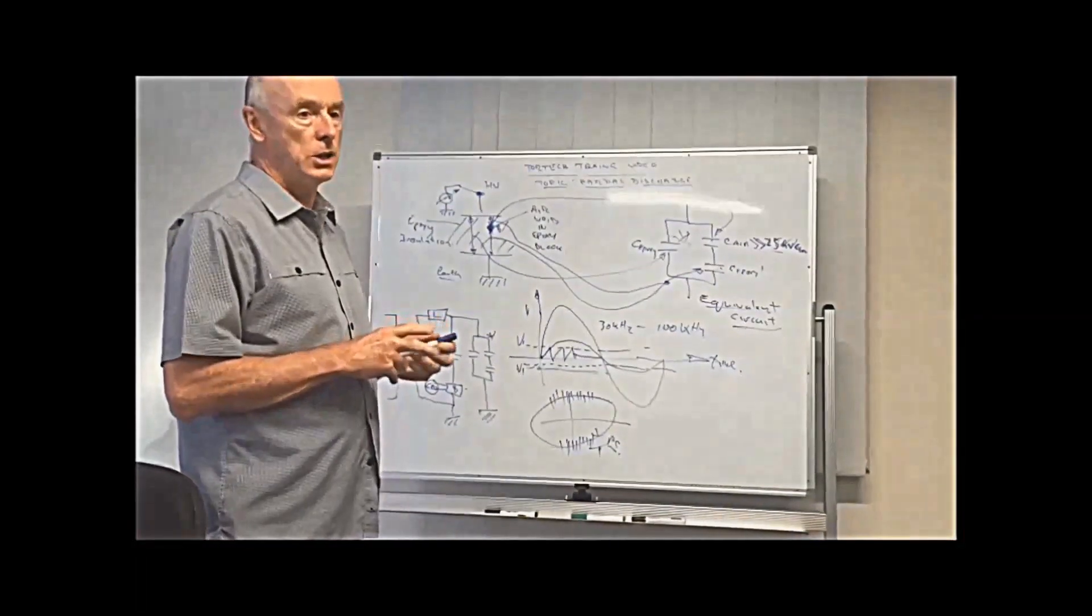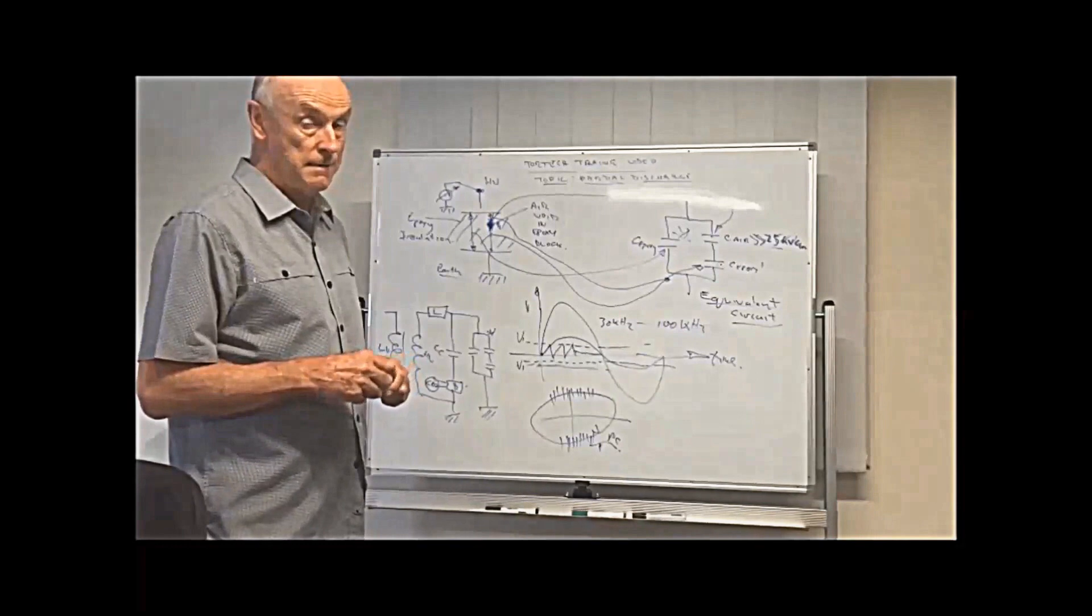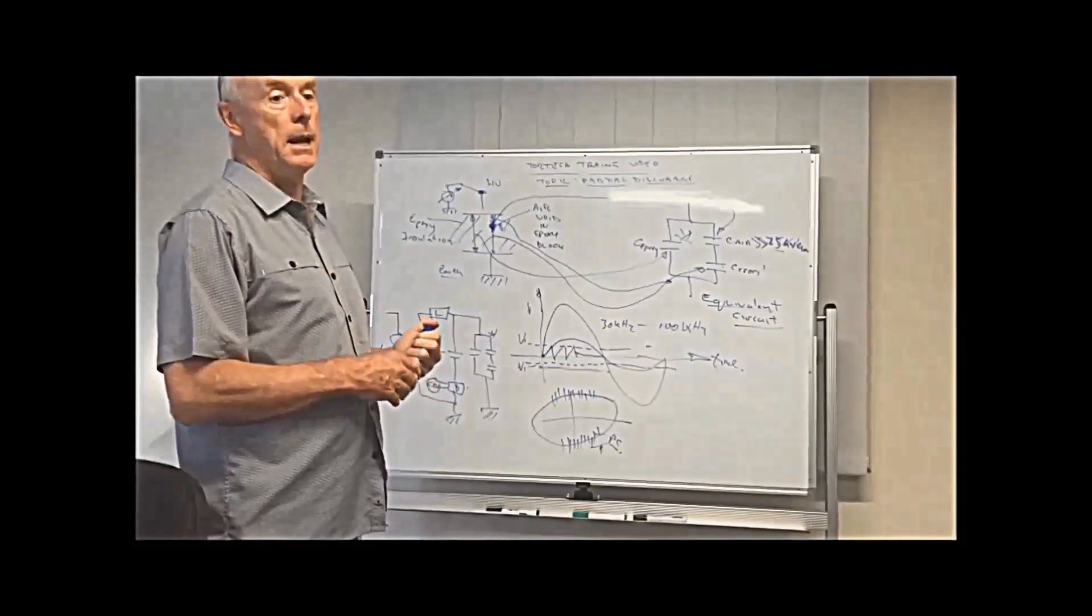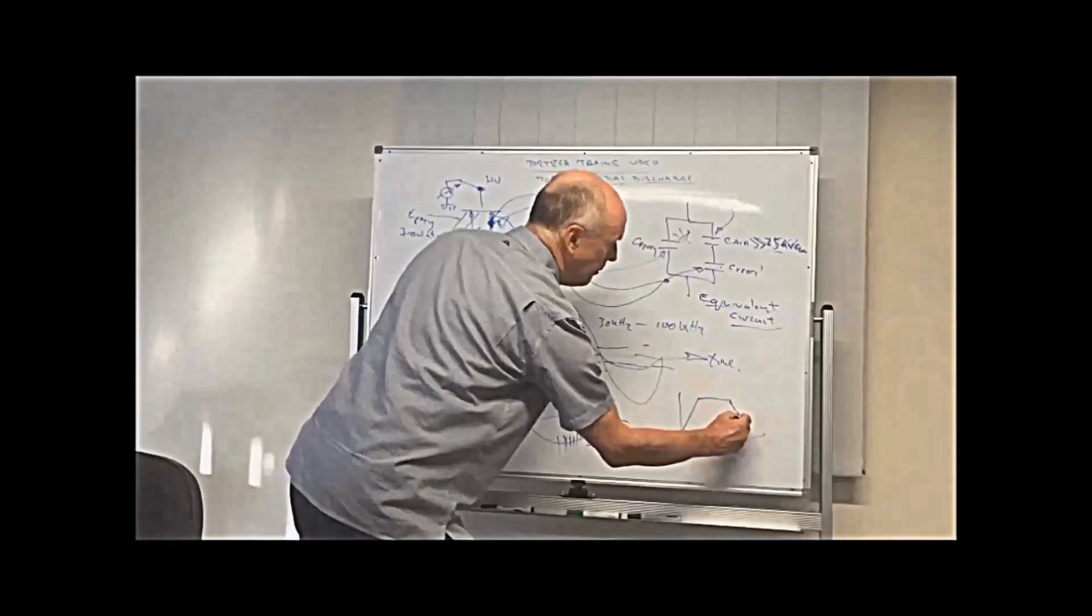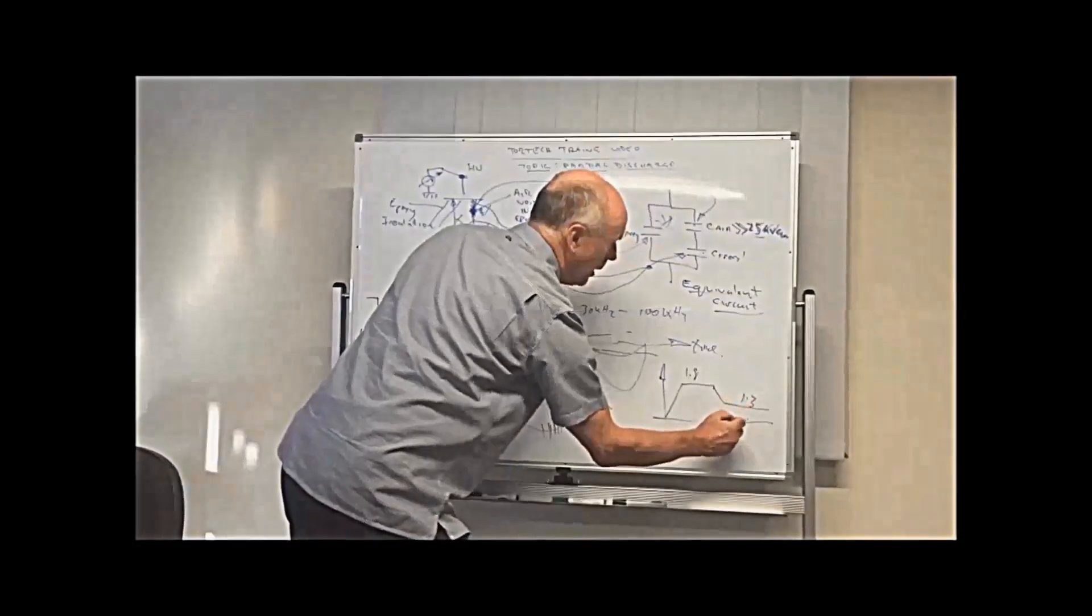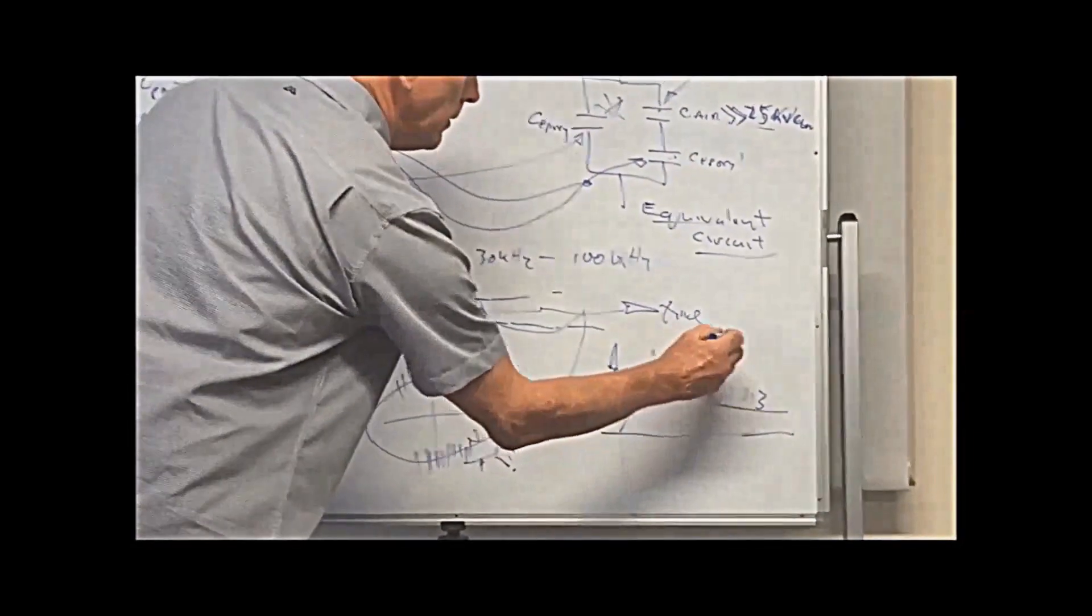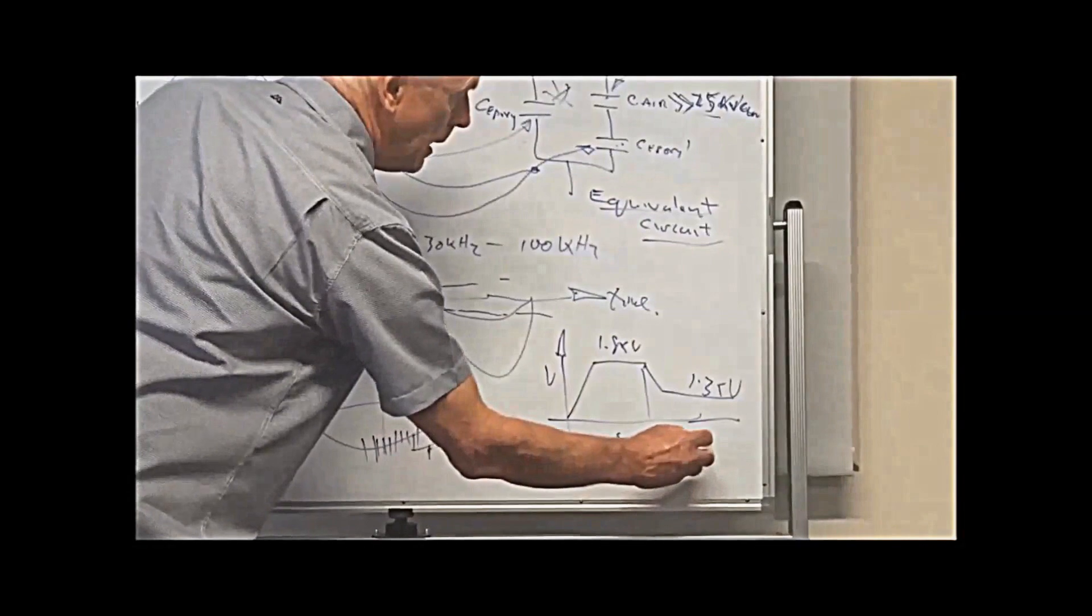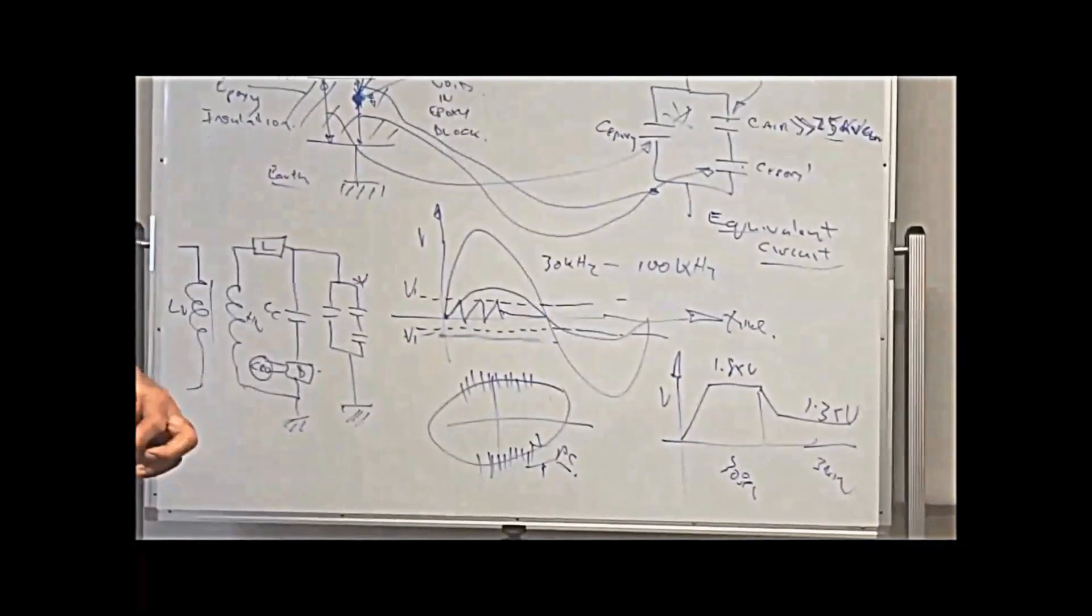So in three phase epoxy insulated transformers, it's very important that the partial discharge is measured. And it should be measured after all high voltage tests, and it normally is measured. You normally take the voltage up to 1.8 times rated voltage and pre-stress it at 1.8 times rated voltage. And then do the measurements. That's for about 30 seconds. And then for about three minutes, you hold it there and you actually measure the partial discharge at 1.3 times rated voltage.